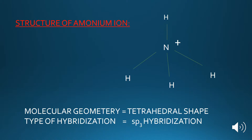What about the molecular geometry and type of hybridization in case of the ammonium ion? Looking at the structure of the ammonium ion, nitrogen is the central atom and four electron pairs are attached around it. According to the definition of sp3 hybridization, when four electron pairs are attached around the central atom, the type of hybridization is sp3 and the molecular geometry is tetrahedral.